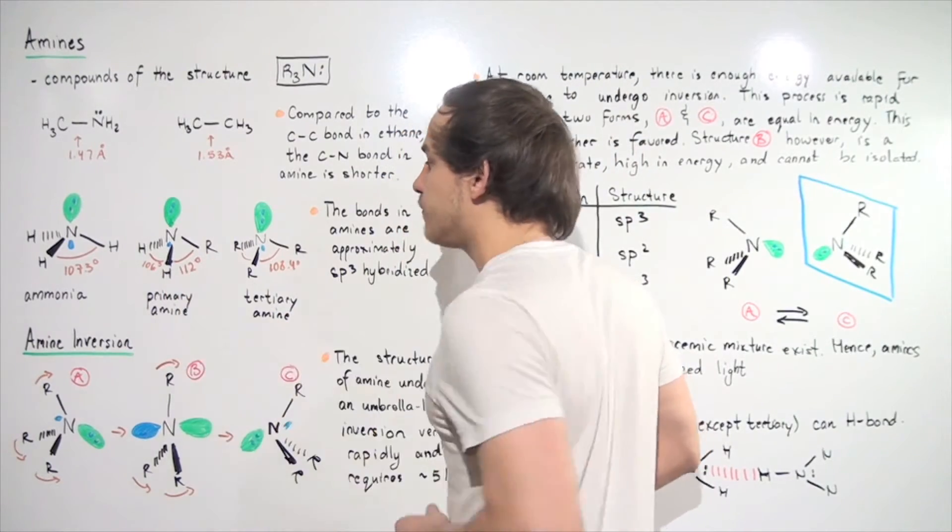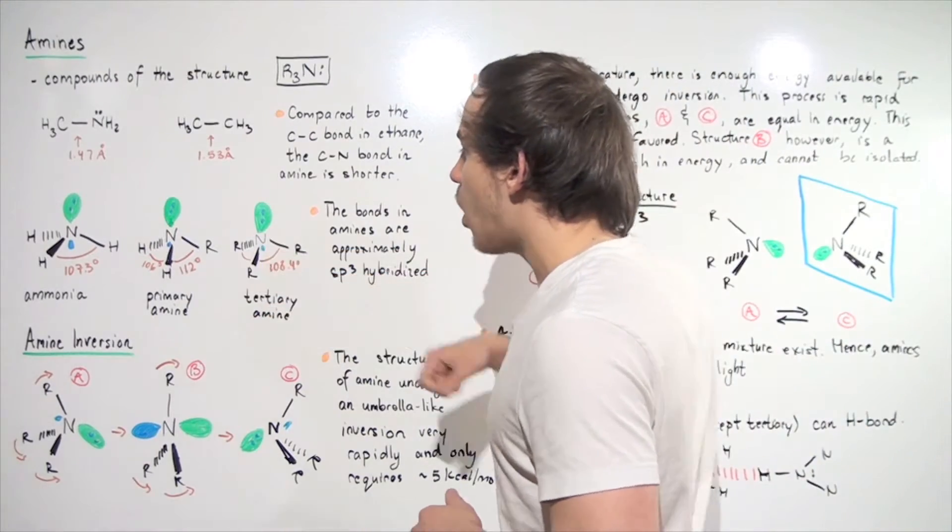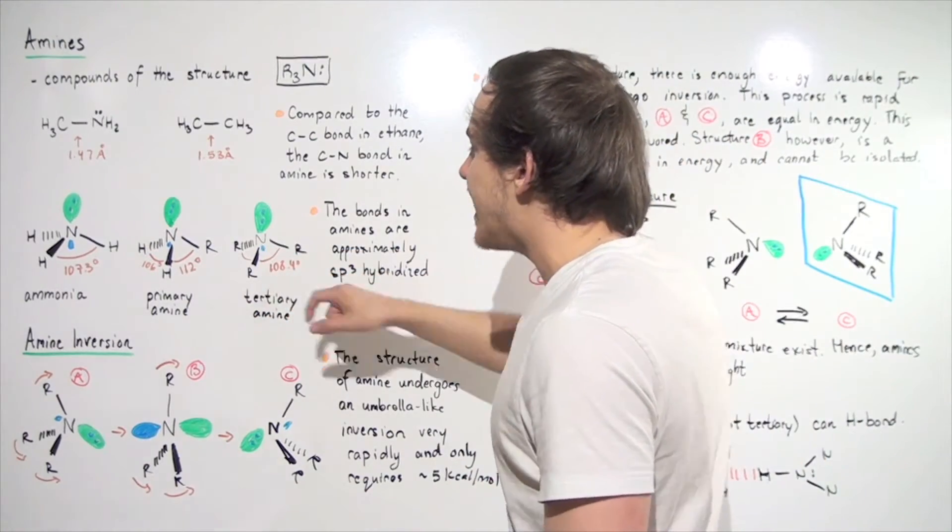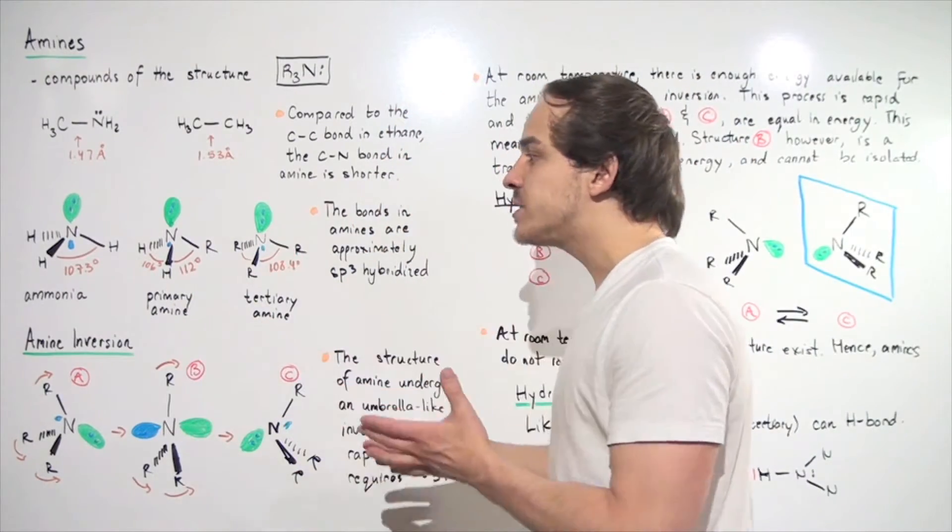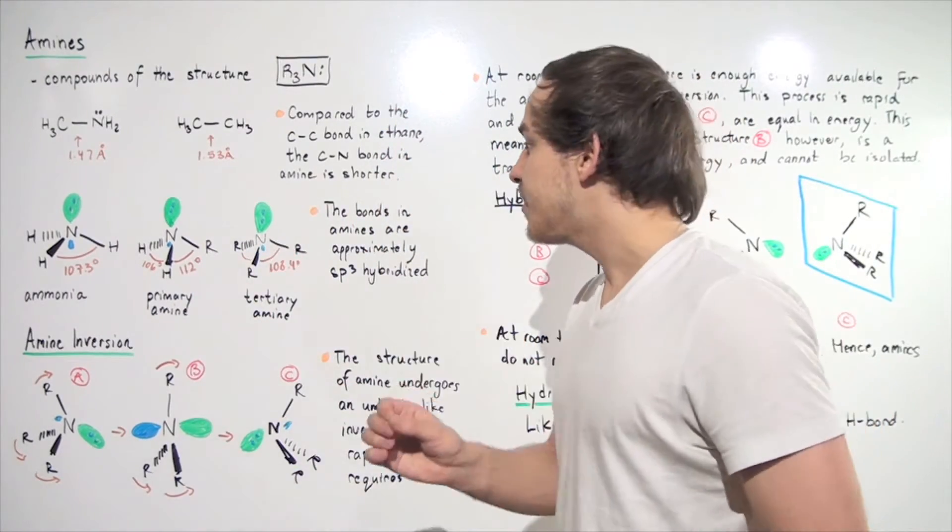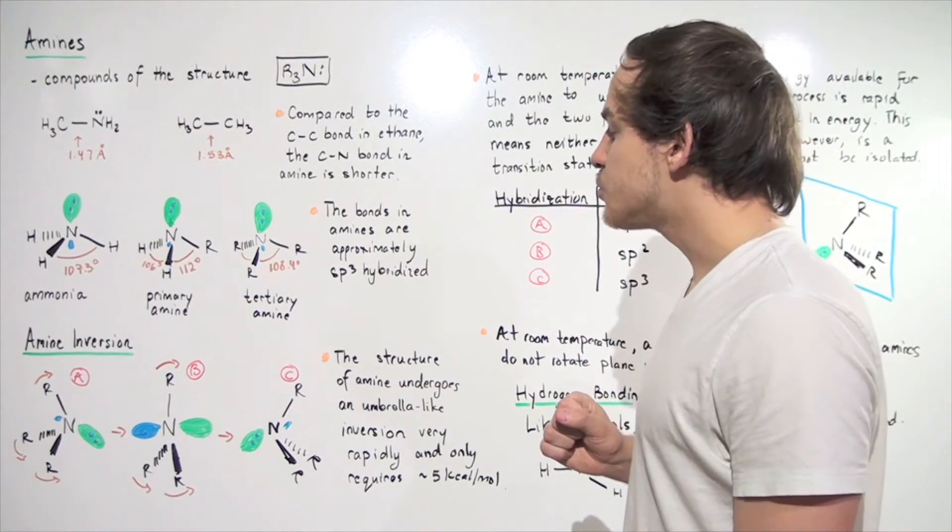This is 106, 112 degrees. And in our tertiary amine, the angle between all the R groups is 108.4 degrees. Notice that in each case, it's very close to the angle in a methane molecule, which is 109.5 degrees.